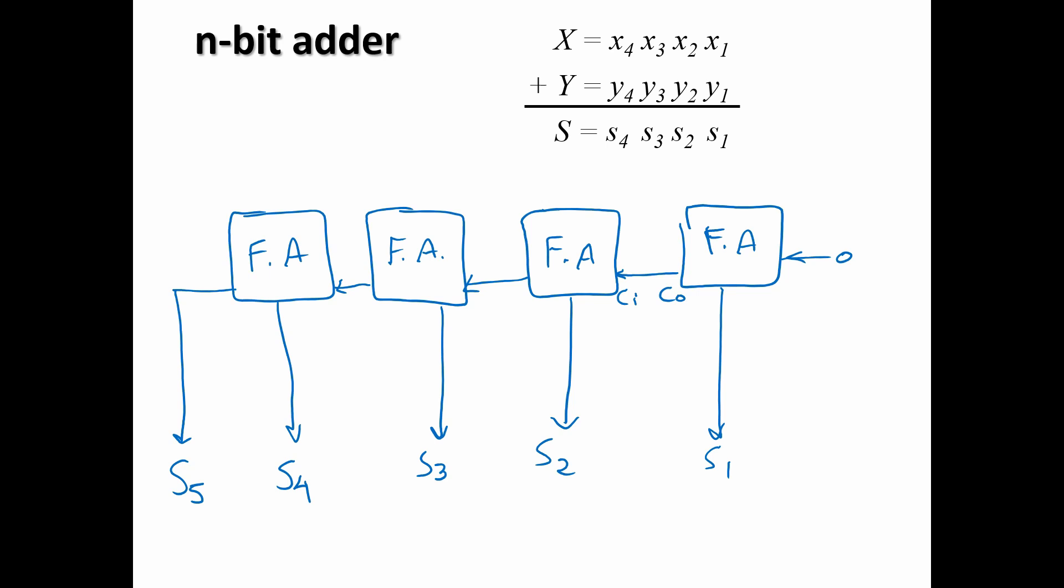What else are we missing? We are missing the X1. We have Y1, X2, Y2, X3, Y3, finally X4, and Y4. So this is what we call a ripple carry adder.